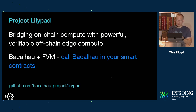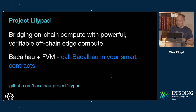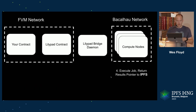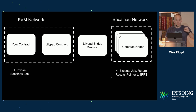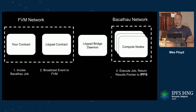The source code is available — please check it out at Lilypad on the GitHub URL. To give you a brief walkthrough of how this works: from the contract that you write, you're going to invoke a Bacalhau job. You're going to call the Lilypad contract through an interface that's easily available. The Lilypad contract is then going to broadcast an event to the FVM chain.